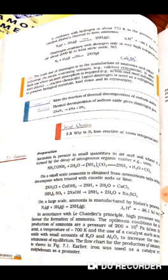On a small scale, ammonia is obtained from ammonium salt when decomposed when treated with caustic soda or lime. Reaction is as follows: 2NH4Cl plus Ca(OH)2